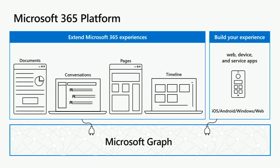What we're doing with the Graph API is using it to extend experiences within Microsoft 365, across documents, conversations, pages, and timelines. You're aware of Delve and many other ways. You're able to both extend experiences within Microsoft 365, as well as build and extend these across your own applications — and you do it in the same way with the same API.